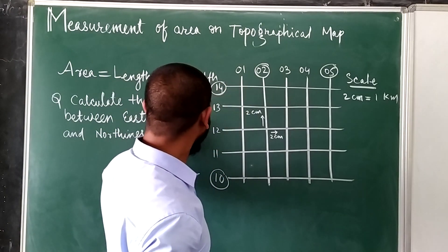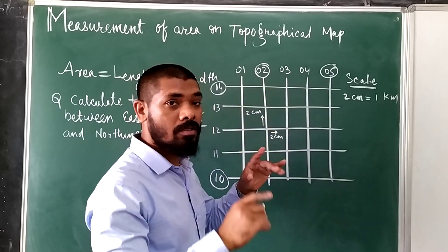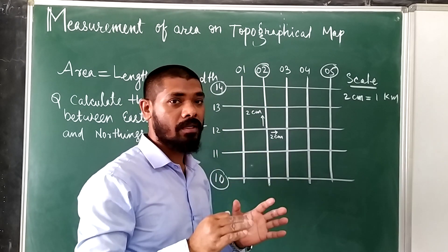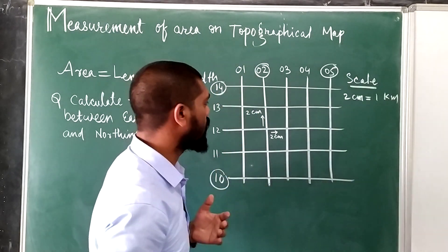When we see the Northings is given and which place these grids are intersecting, they are meeting, that area will be the answer of the question, right?